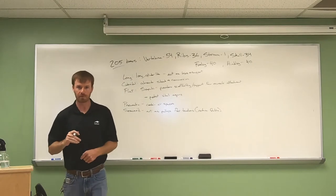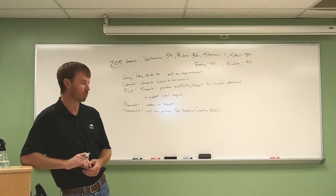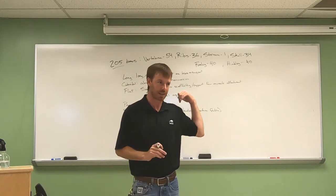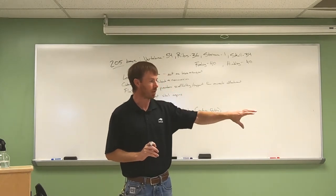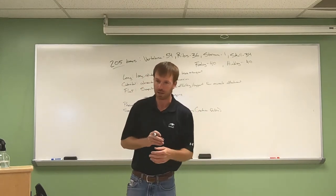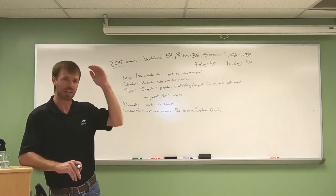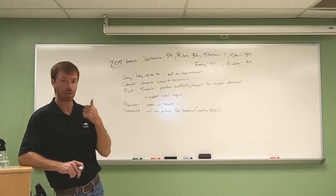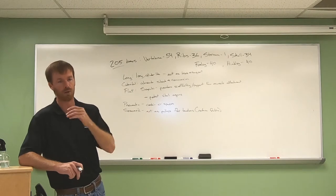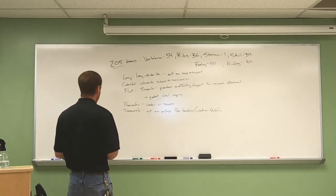The primary function of sesamoid bones is that they act as pulleys for tendons — in parentheses, we could say reduce friction. We'll point those out on both the forelimb and hind limb shortly. One thing to mention as we go over these bone categories: we just used the terms proximal and distal — directional terms. You really need to familiarize yourself with those. On Canvas I've posted handouts showing various directional terms: medial and lateral, dorsal and ventral, proximal and distal, cranial and caudal.